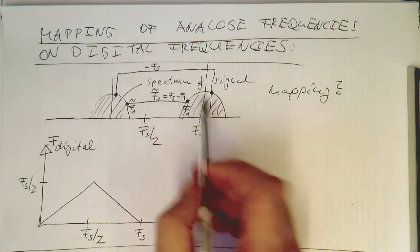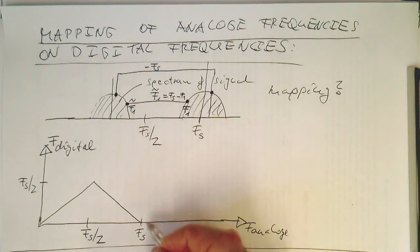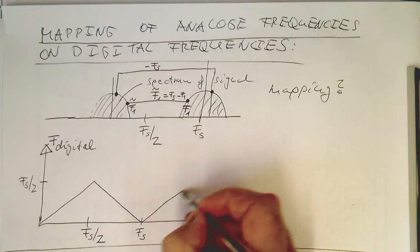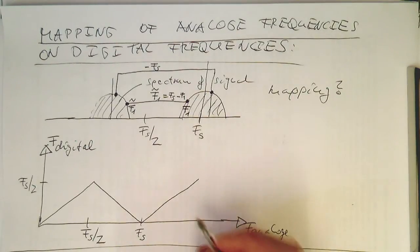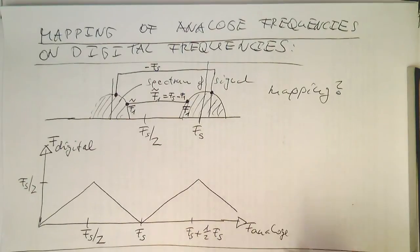And so now we are just subtracting Fs here. So this means this just goes linearly up again here until we are at Fs plus Fs/2. And so on and so on. So we have a beautiful mapping here.